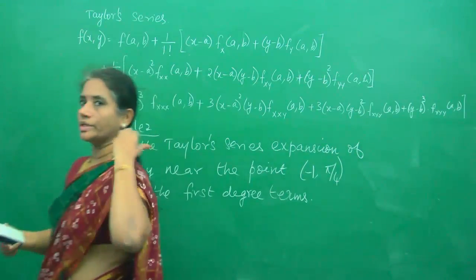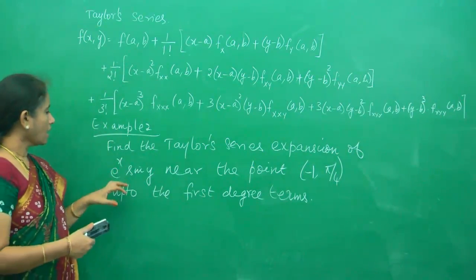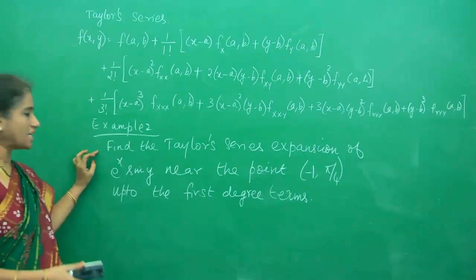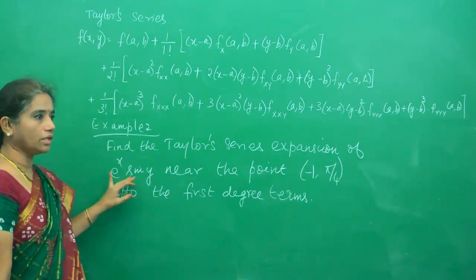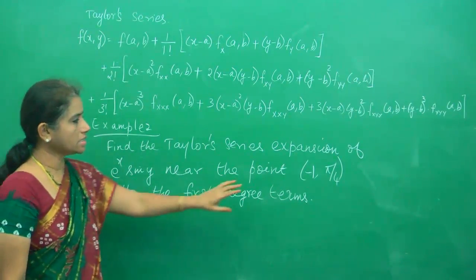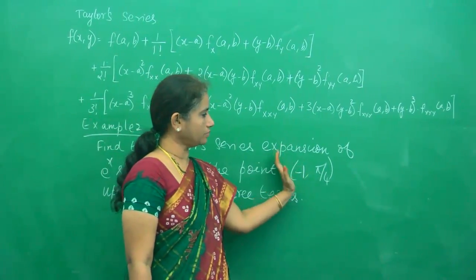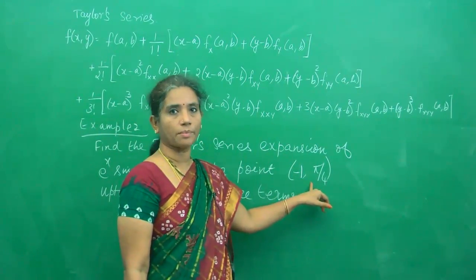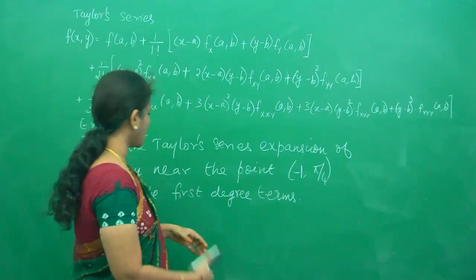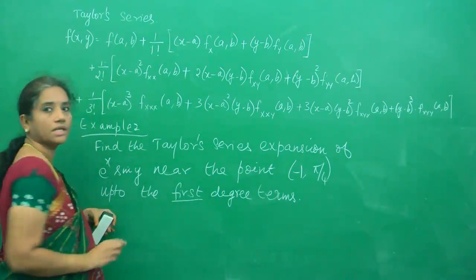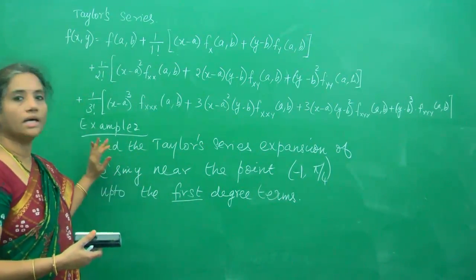Please understand, the question says you need to find the Taylor's expansion of e^x sin y at the point (-1, π/4), and you are asked to write just up to the first degree term. So from this it's clear.